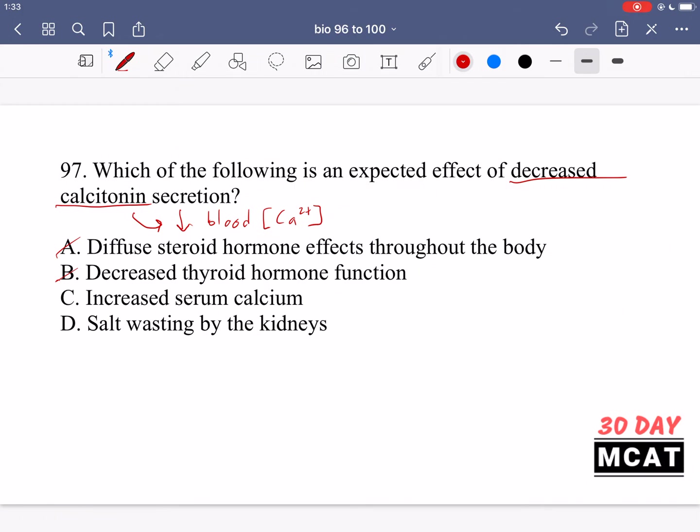Option C is saying an increased serum calcium. This one is correct. Just thinking about the main function of calcitonin and if we have less of it then we have the opposite effect of what it normally does. Increased serum calcium, so higher blood calcium level. And finally D, salt wasting by the kidneys. This is more related to the salts that the kidneys are mainly responsible for, then that would be sodium and potassium and that's different than calcium. So it's not really going to be something which involves the kidneys as much.